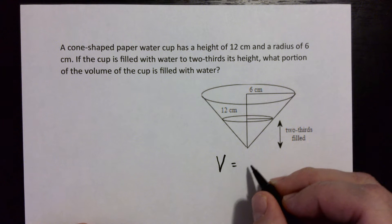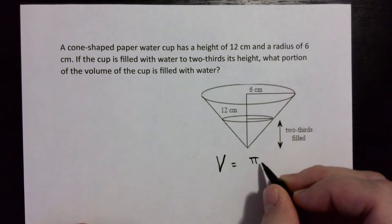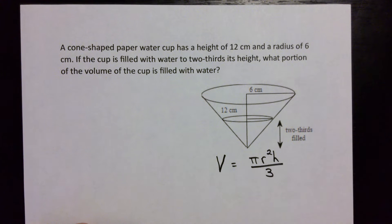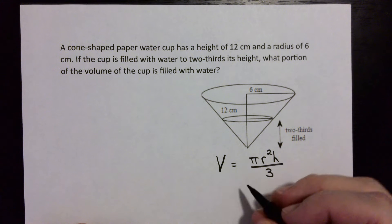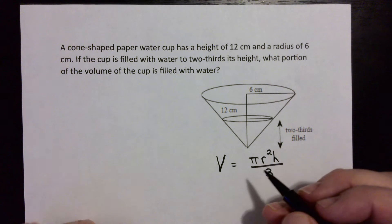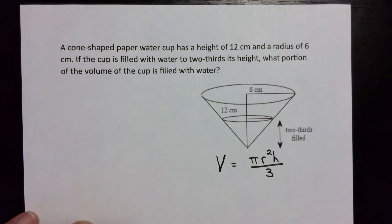And the volume can be written like this: π r squared h over 3. Okay, and we will use big R and big H for the big one and we'll use little r and little h for the little one.